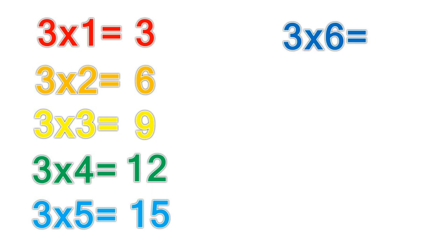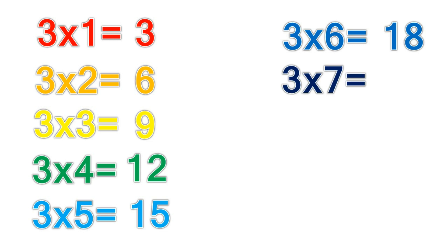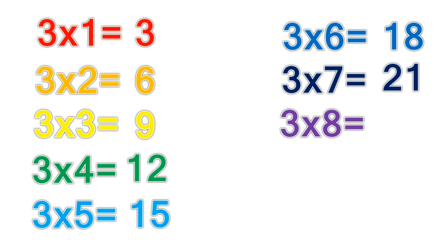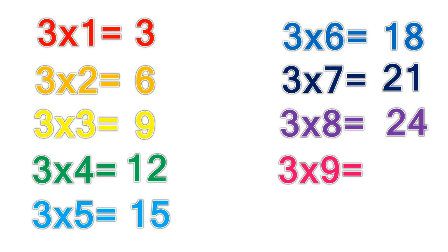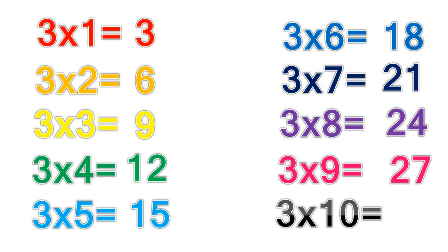3 times 6 equals 18. 3 times 7 equals 21. 3 times 8 equals 24. 3 times 9 equals 27. 3 times 10 equals 30.